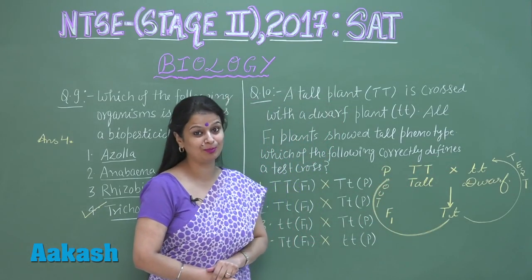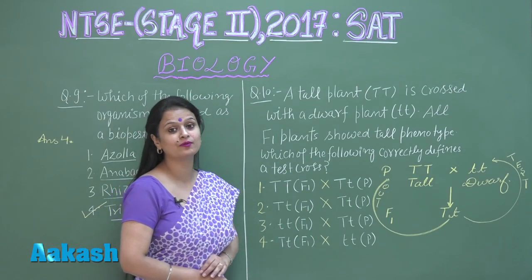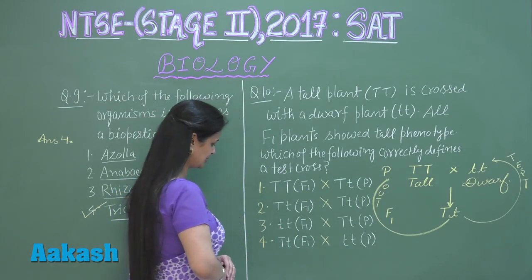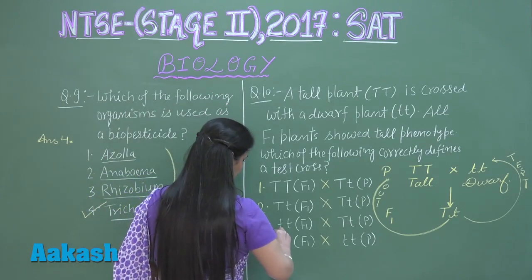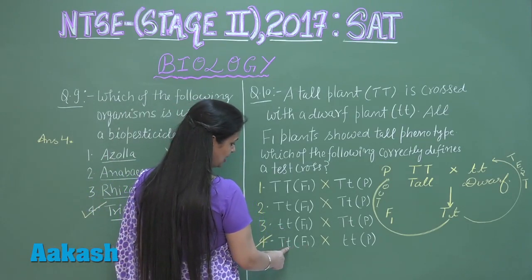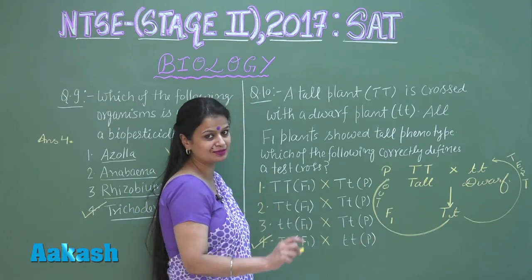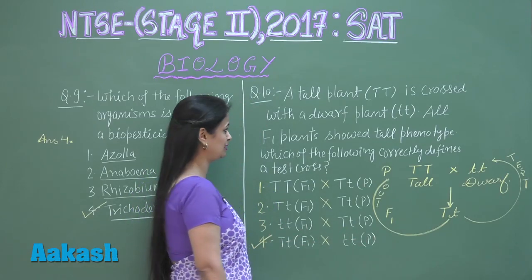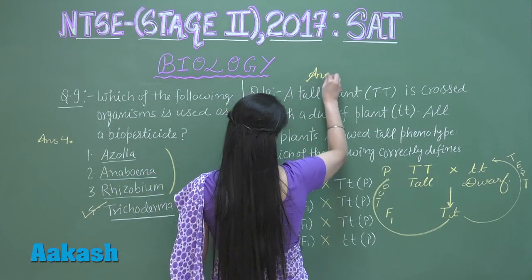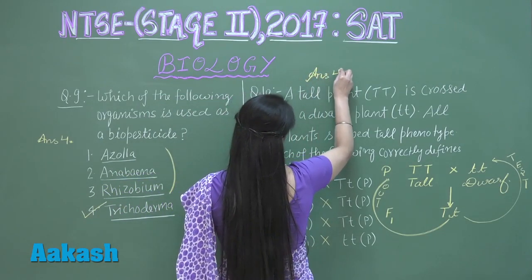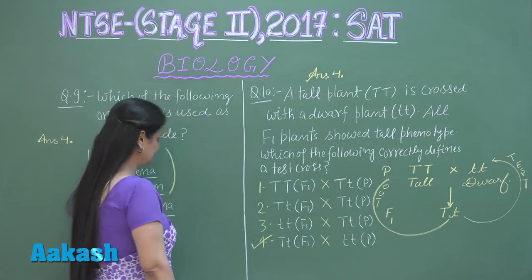Looking for the right option for the test cross — that is option number four — the F1 hybrid is crossed with the homozygous recessive parent. So the right answer for question ten is option number four.